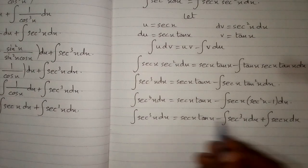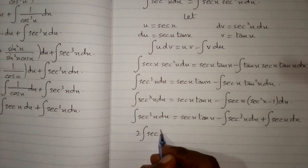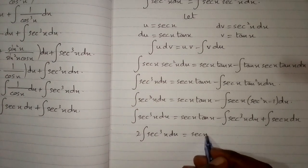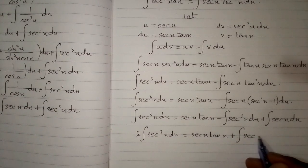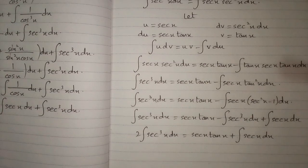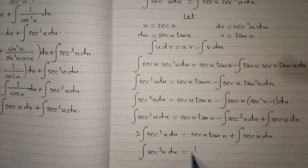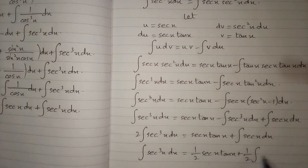We take the sec cubed x integral to the other side, so we have 2 times the integral of sec cubed x dx equals sec x tan x plus the integral of sec x dx. Therefore the integral of sec cubed x dx equals one half of sec x tan x plus one half of the integral of sec x dx.